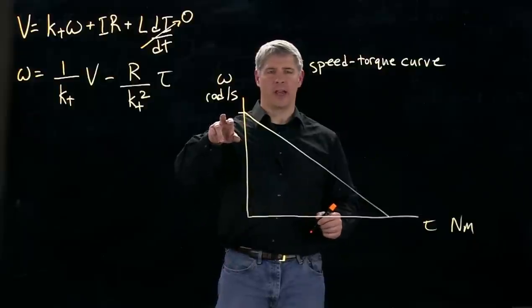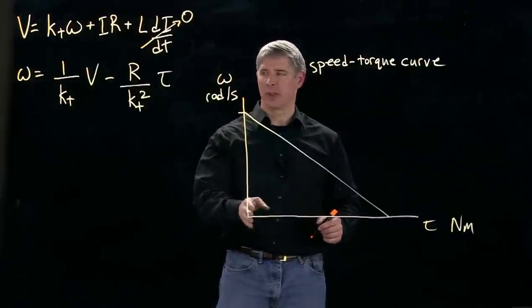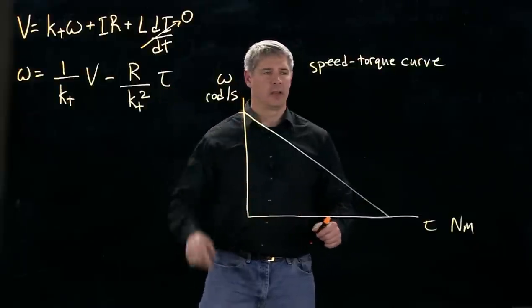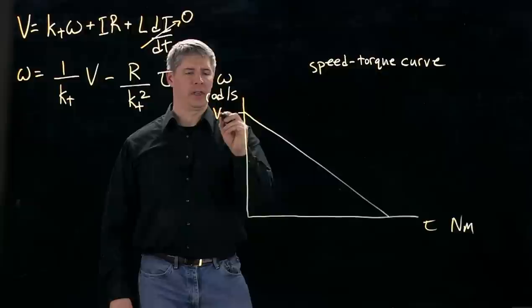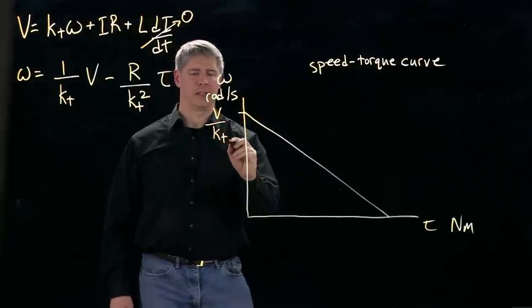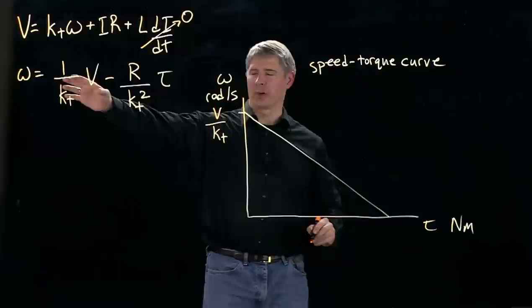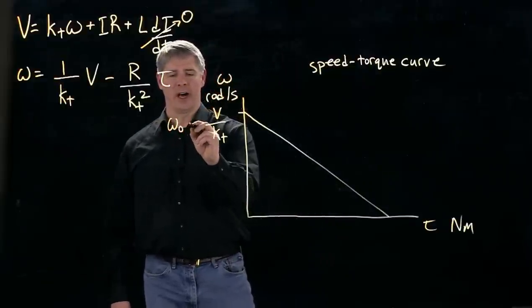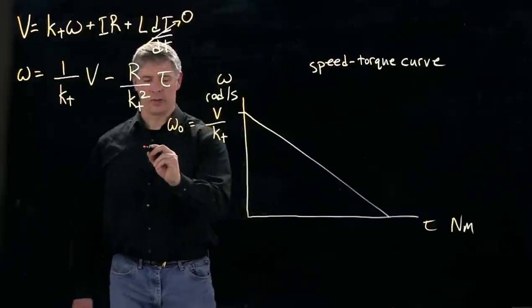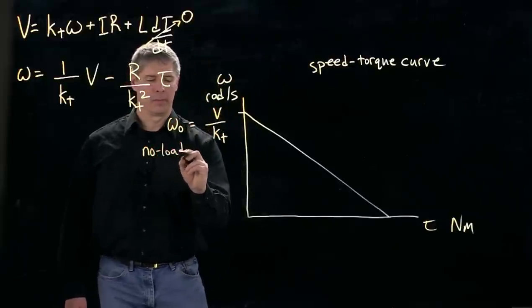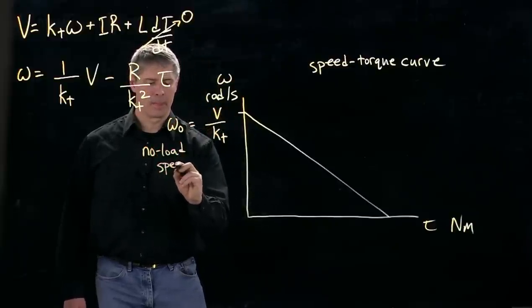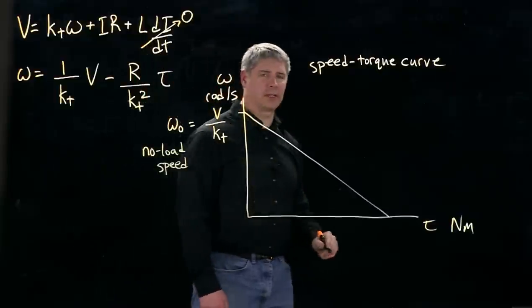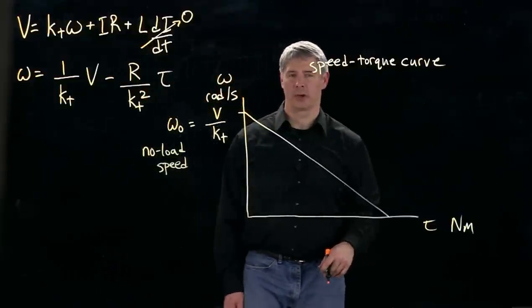So if we take a look at the maximum speed that's reached when the torque output here is zero, then we just get V over kt. So we plug in zero for torque, and that's our maximum speed. I'll call that omega naught. This is also called the no-load speed.